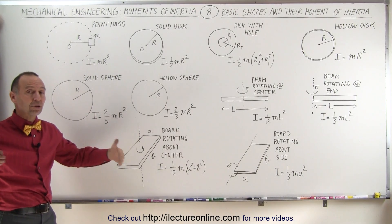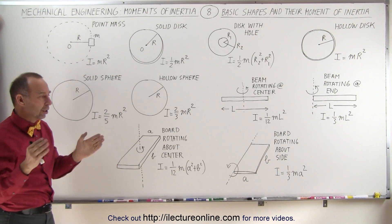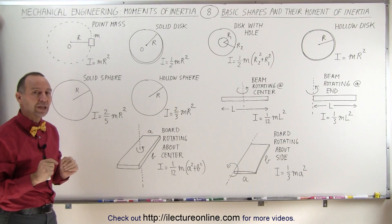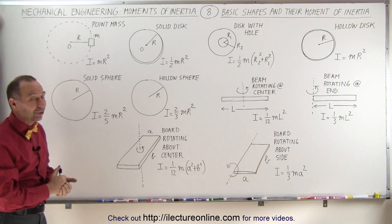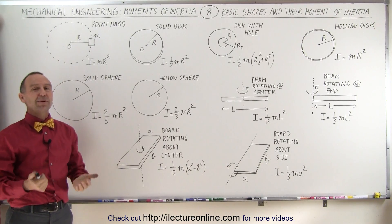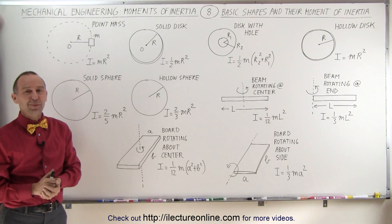The farther away the mass is distributed, the larger the moment of inertia. The closer the mass is to the point of rotation, the smaller the moment of inertia. That gives you a good perspective of what we mean by moment of inertia.